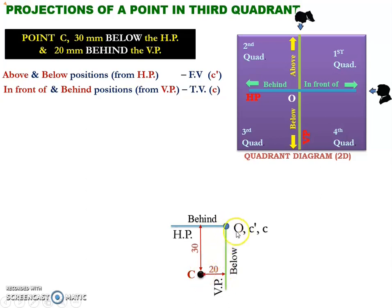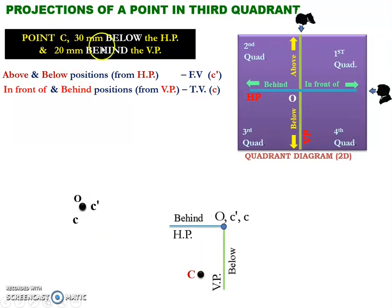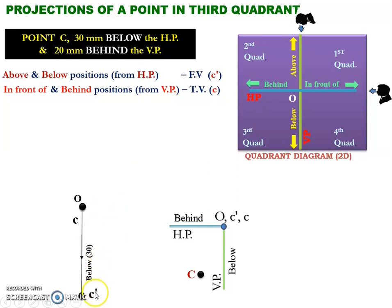Temporarily I am assuming that the front view point C dash and the top view point C are located at the origin position. For easy understanding, I am relocating this origin point to a new point and assuming that the origin point, C dash, and C are all located on a common point. Now let us consider the first half of the problem: point C is 30 mm below the horizontal plane. So for 'below', we use the small letter with dash — the C dash point, that is the front view point, needs to be moved in the below direction for a distance of 30 mm.